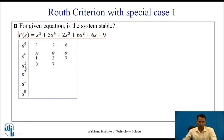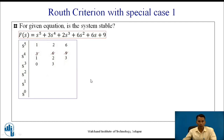For the s raised to 3 row: 1×2 minus 1×2 gives 2 minus 2 = 0, divided by 1 is 0. So we have 0 in the first column of the Routh table. The next value is 1×6 minus 1×3 = 3, divided by 1 gives 3. According to Special Case 1, since we have a zero only in the first column, we replace that 0 with epsilon and keep 3 as is.